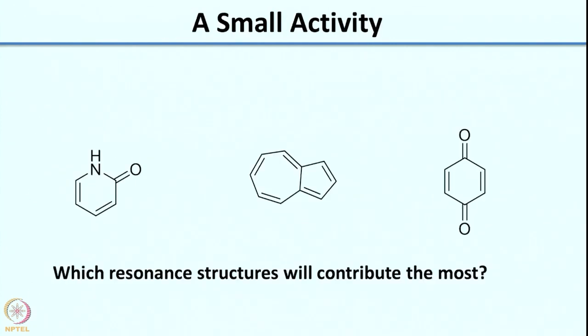Before the class ended, I gave you a small activity to do as homework. What I wanted you to do is, for the structures given, write the resonance structures and say which resonance structure would contribute the most. The actual structure is a hybrid of all the resonance structures, but sometimes due to added stability of one particular structure, it contributes more. Let us now see what the answers are to these problems.